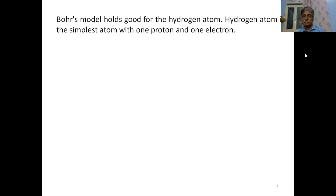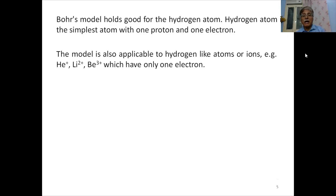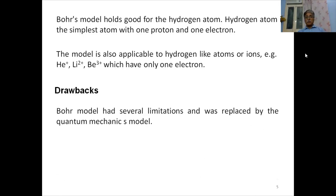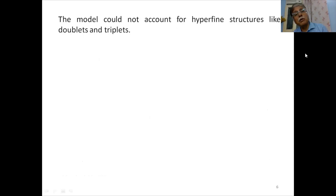Bohr's model holds for the hydrogen atom — the simplest atom with one proton in the nucleus and one electron. The model is also applicable to hydrogen-like ions with only one electron, such as helium-plus, lithium two-plus, and beryllium three-plus. Now let us consider the drawbacks of the Bohr atomic model. It stood strong in explaining spectra of lighter hydrogen-like atoms, but could not explain spectral lines of heavier atoms, and could not account for hyperfine structures like doublets or triplets.